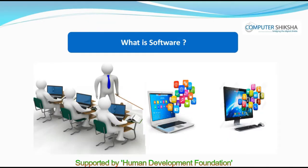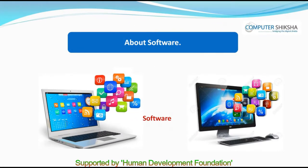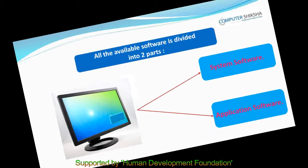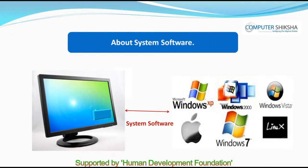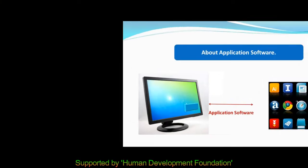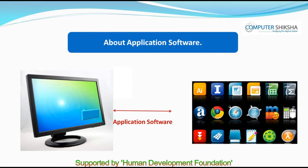What is software? Software is a program using which you can work on the computer. All the available software is divided into two parts: System software, which is the software a computer user or programmer makes when working on Windows on the computer, and Application software, which are those softwares that a user installs on his computer to use as per their need.